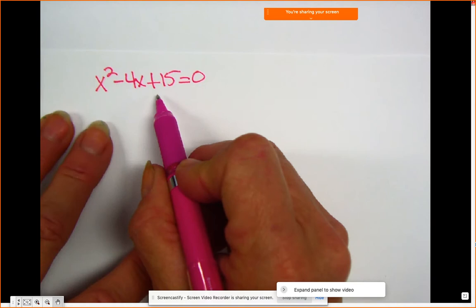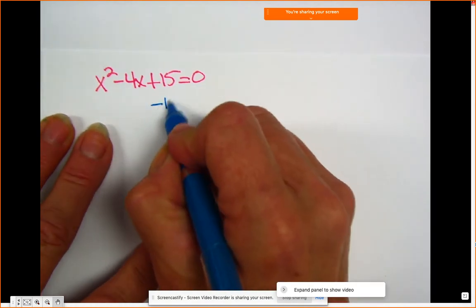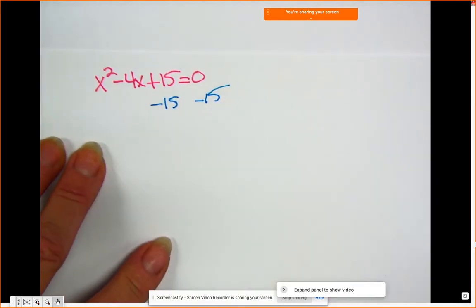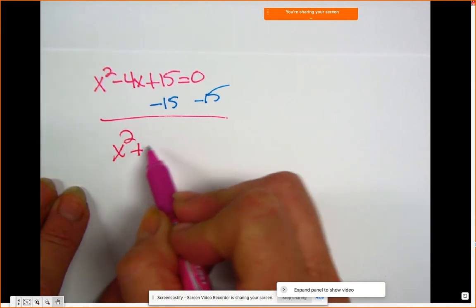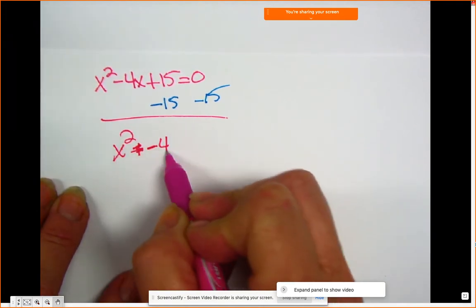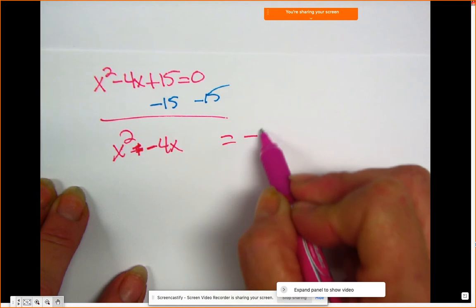Okay, I'm going to move that 15. So I'm going to go ahead and subtract 15 from both sides. Okay, let's simplify: x squared, oh, it's minus 4x, equals negative 15.